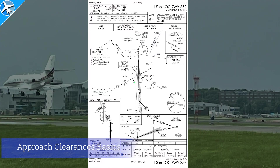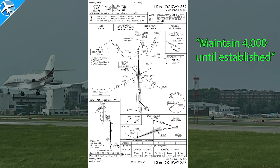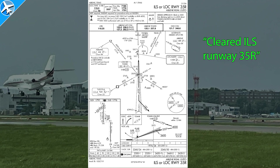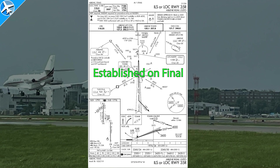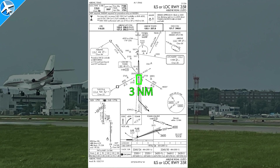When being vectored to final and given an approach clearance, the controller will always give you your distance from the final approach fix in nautical miles. They'll give a heading to maintain until intercepting the final approach course, as well as an altitude to maintain — or possibly an altitude to descend to and maintain until the final approach fix — followed by the approach clearance most of the time. Normally, ATC is going to vector the aircraft a minimum of three nautical miles from the final approach fix, with an intercept angle no greater than 30 degrees.